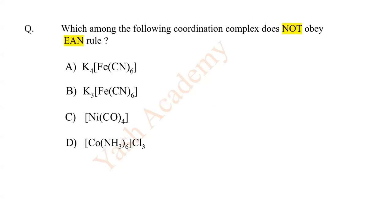Which among the following coordination complexes does not obey the EAN rule? The answer is D: K3[Fe(CN)6].